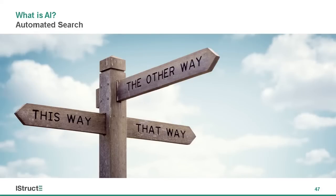For example, it's not possible to directly solve problems like finding the shortest route between two points. Instead, AI algorithms search for the best route using a variety of methods. Likewise, searching through unsorted databases is also AI, the most famous of which has become a verb — to Google.